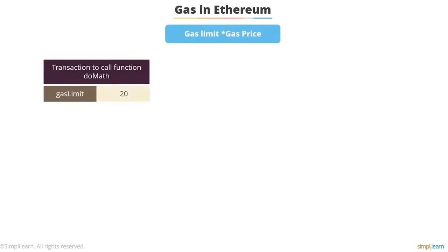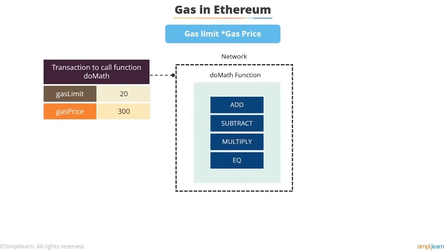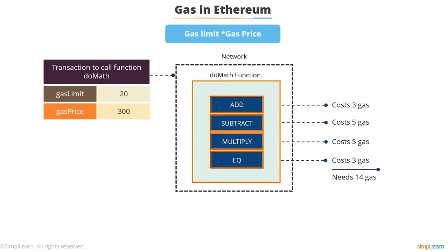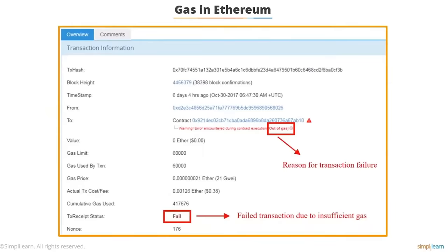When someone refers to gas they are either talking about gas price or gas limit. The total cost of a transaction is the product of gas limit and gas price. The gas limit is the maximum amount of units of gas one is willing to spend on a single transaction — this avoids situations where a contract error causes you to spend a very high amount of gas. However, if enough gas to cover the computational resources is not supplied with the transaction, the transaction will fail due to an out-of-gas error. Gas is essentially a commodity — a cost of using the system.